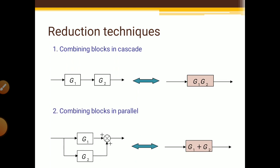The second rule is combining blocks in parallel. There are two blocks G1 and G2 in parallel, and their signals are connected to a summing point. Depending upon the sign of the summing point, you have to add or subtract the signals. In this case, both signals are positive, so the final block is G1 plus G2. While in parallel, we add the blocks.